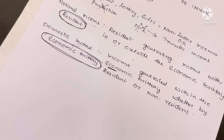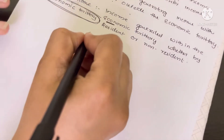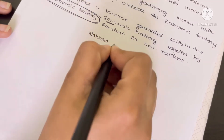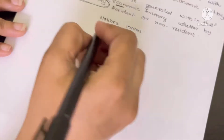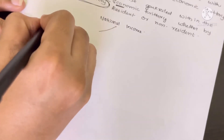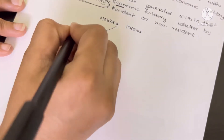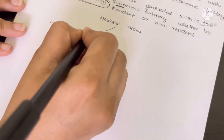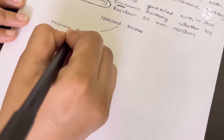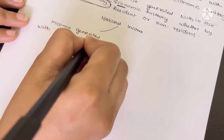In the previous video, I told you about domestic territory and the resident. I will give you the link in the description box. National income can be understood in two ways: income generated within the economic territory by the resident.